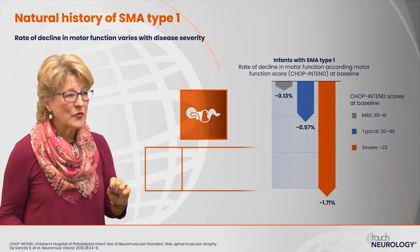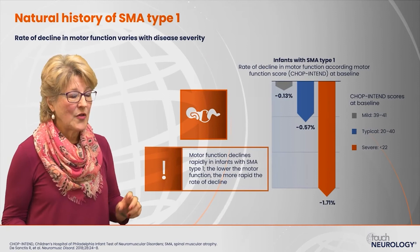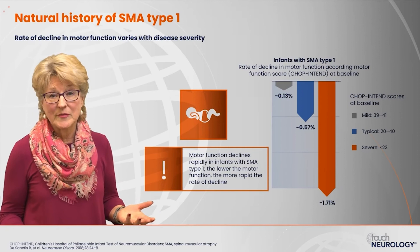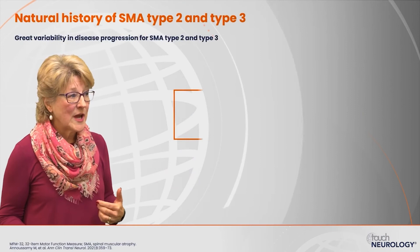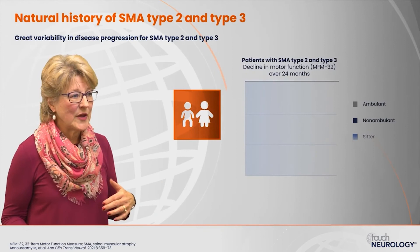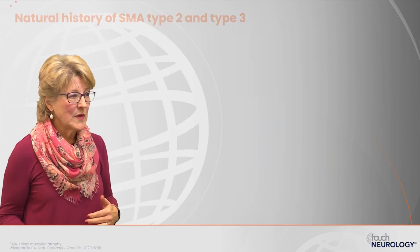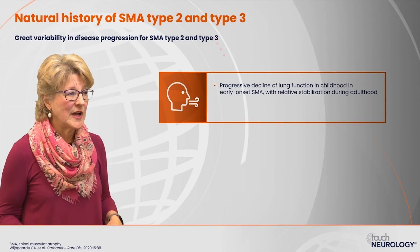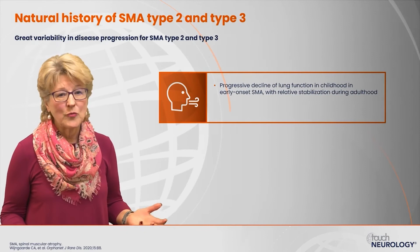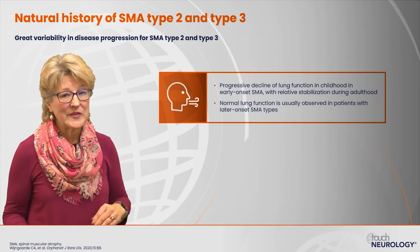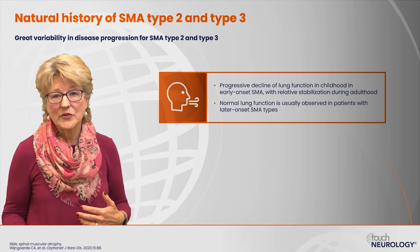Motor function declines very rapidly in patients with type 1 SMA — the lower the motor function, the more rapid the rate of decline — and prior to disease-modifying therapies, we expected death. For types 2 and 3 there is much more variability among sitters, walkers, and standers. There's also a difference in lung function: a progressive decline in younger patients with early onset SMA with relative stabilization during childhood, whereas type 3 and type 4 patients who present closer to adulthood typically will have normal lung function.